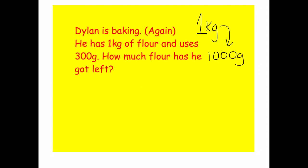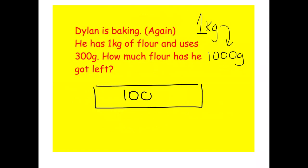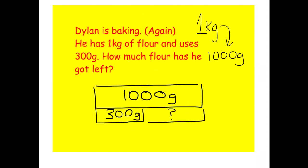Now we can look at that in a bar model, which will help us work out our answer. If we had 1000 grams and we're told that Dylan uses 300 grams, we are asked to work out the missing bit. We can do so with a subtraction sum: we take our 1000 and take away 300.